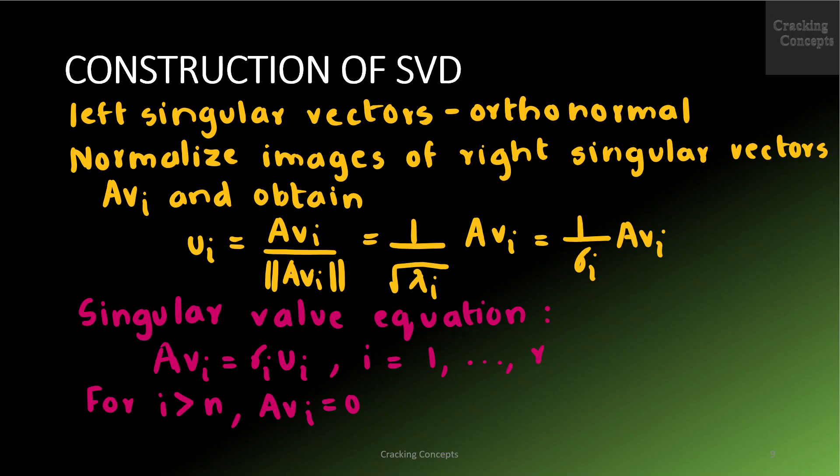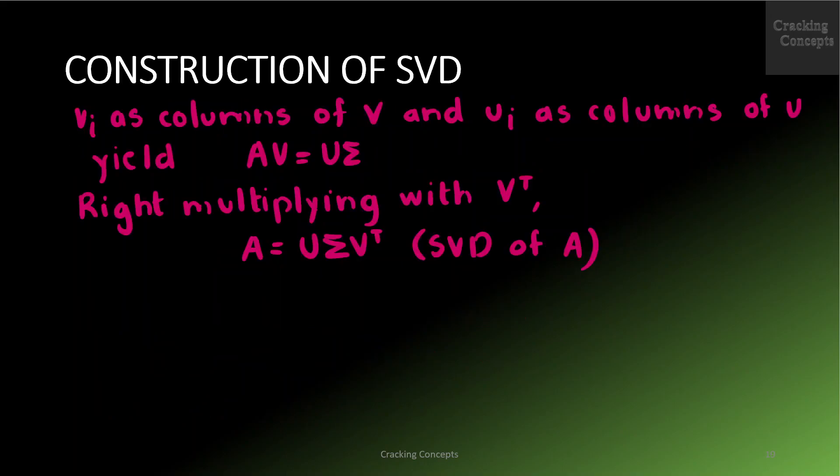For the case where i > N we have AVi = 0 and we still know that Vi form an orthonormal set. This means the SVD also supplies an orthonormal basis of the kernel, the null space of A — the set of vectors x with Ax = 0. Moreover, concatenating the Vi as columns of V and Ui as columns of U yields AV = U Σ, where Σ has the same dimensions as A and a diagonal structure for rows 1 to R. Hence right-multiplying with V^T yields A = U Σ V^T, which is the SVD of A.